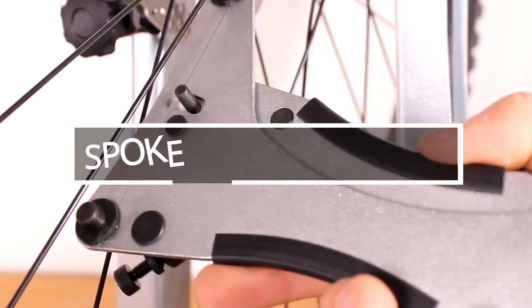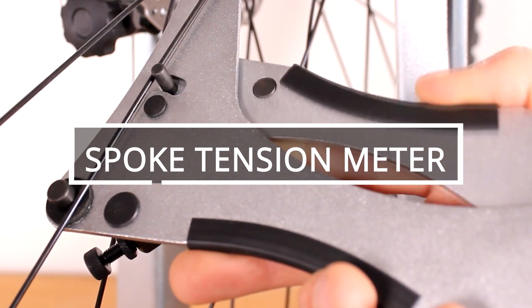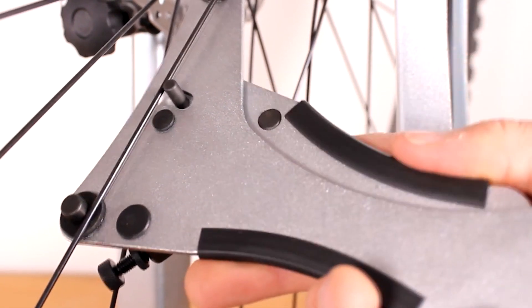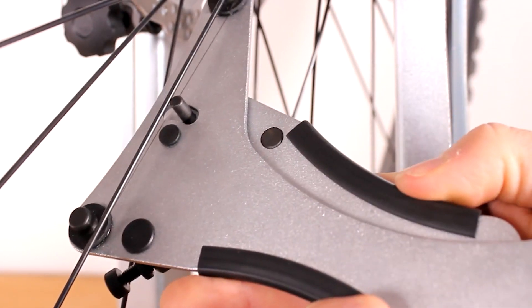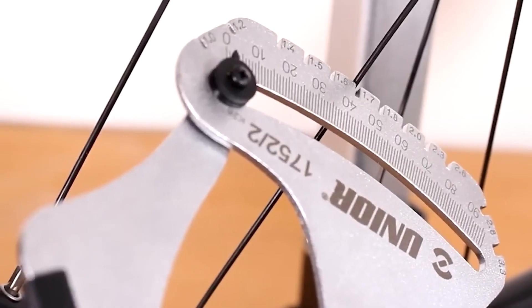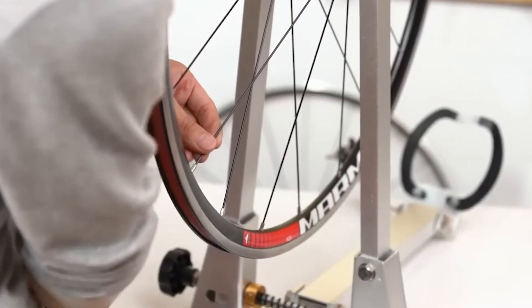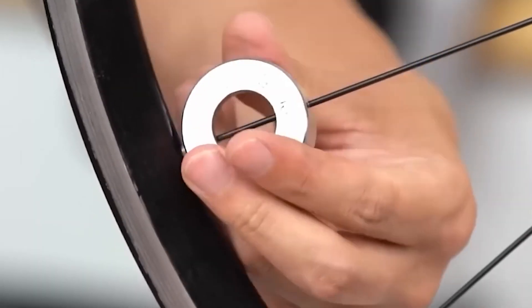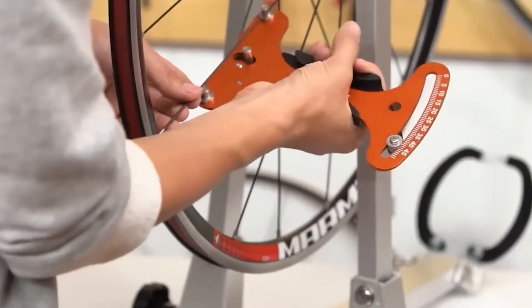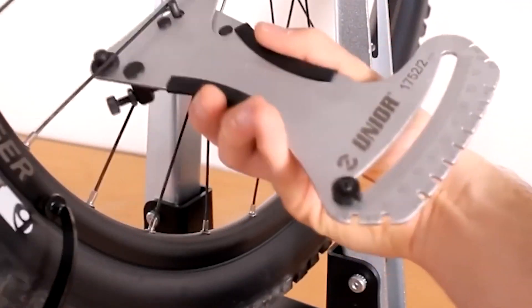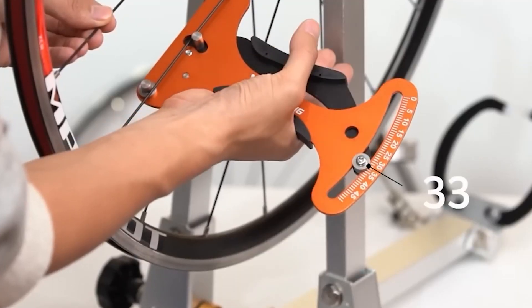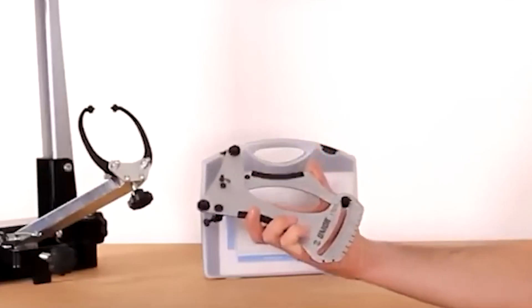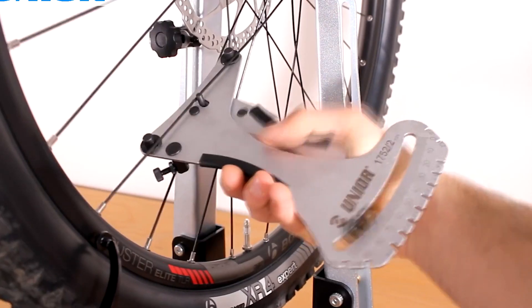Spoke tension meter. Bicycles are not only an enjoyable means of transportation that allow you to bypass traffic congestion, but they also represent a substantial global industry. In 2014 alone, an astounding 132 million bicycles were manufactured worldwide, leading workshops to equip themselves with tools that streamline and simplify their work. A remarkable example is displayed on your screen: this is a spoke tension meter.